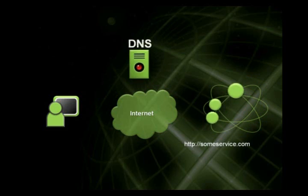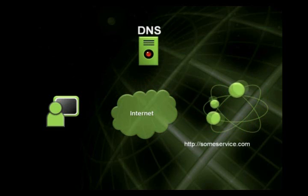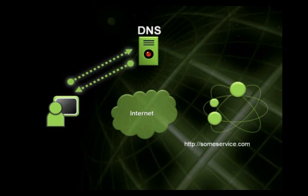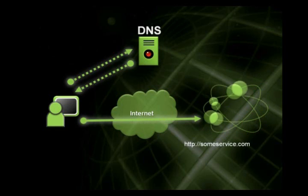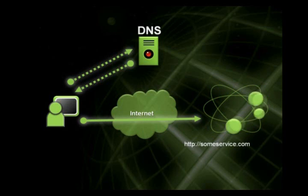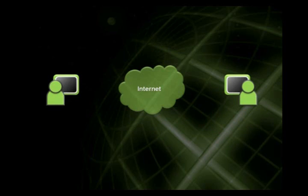I'm sitting at my laptop, I want to connect to some service on the internet at someservice.com, so I'll go and talk to a DNS server and ask where someservice.com physically resides from an IP perspective. The DNS gives me the actual address and I connect to that service. This works great because I have a fixed name, a fixed IP address associated with that name, and I'm reasonably sure someservice.com will always be available.